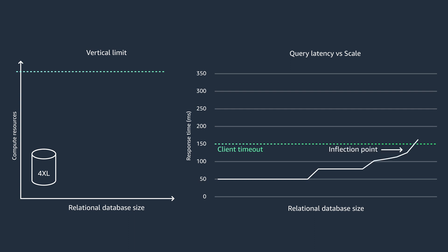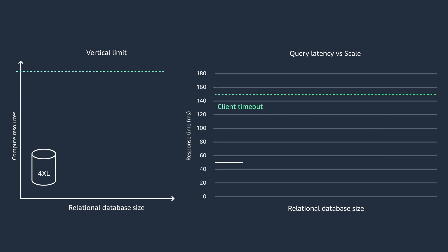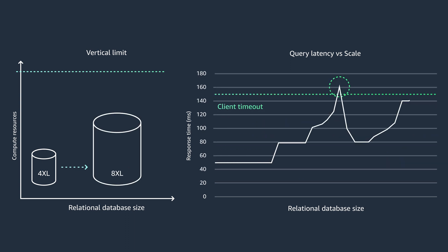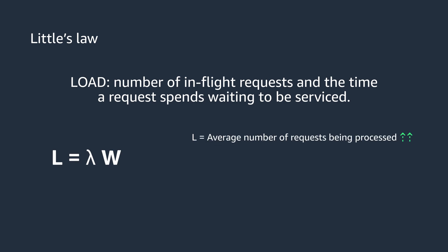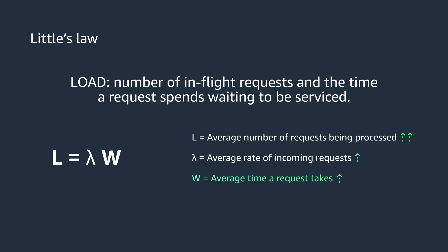In this situation, you can upgrade database instances from a smaller to a larger instance to handle additional user traffic, but you will reach vertical limits eventually. When the limits are reached, you still face increased average response time. This phenomenon can also be explained with Little's Law — it says as the average number of requests being processed and average rate of incoming requests increase, the average time it takes a request increases.